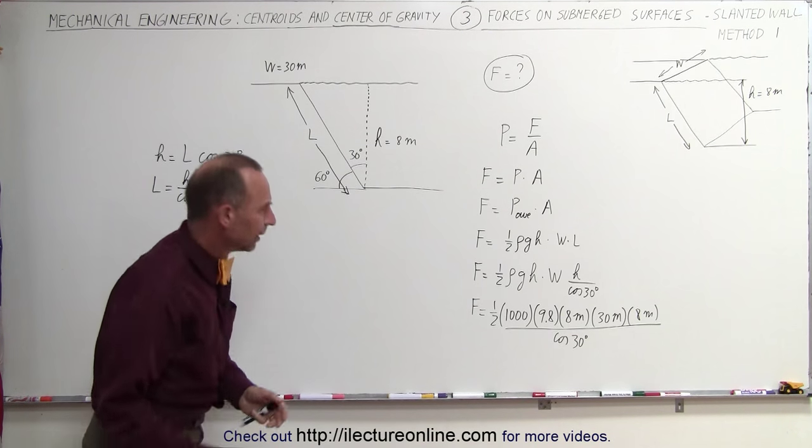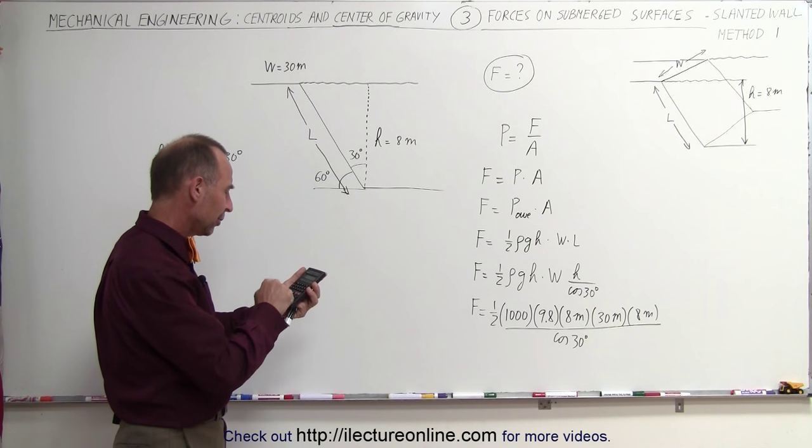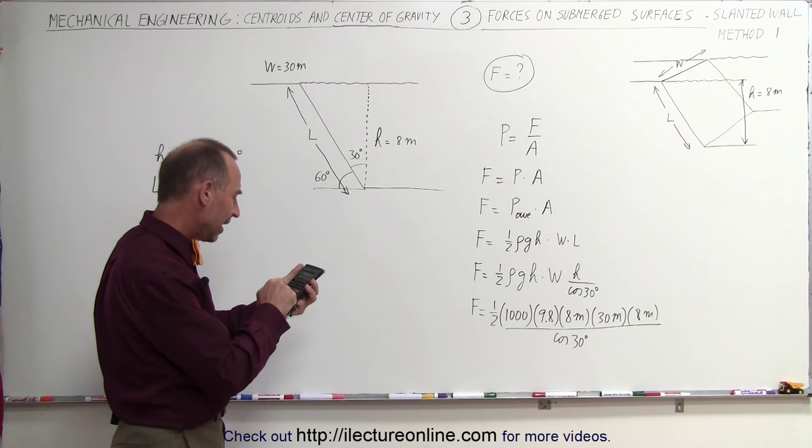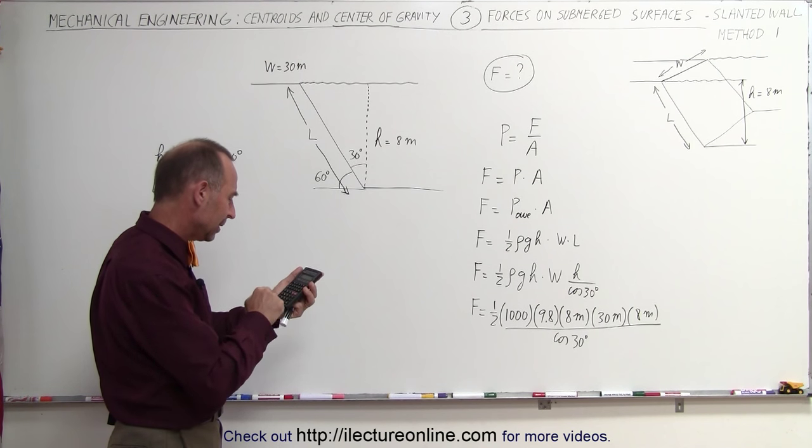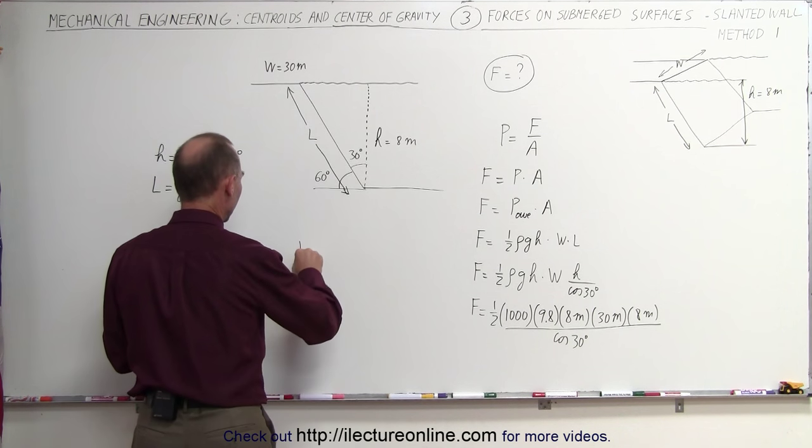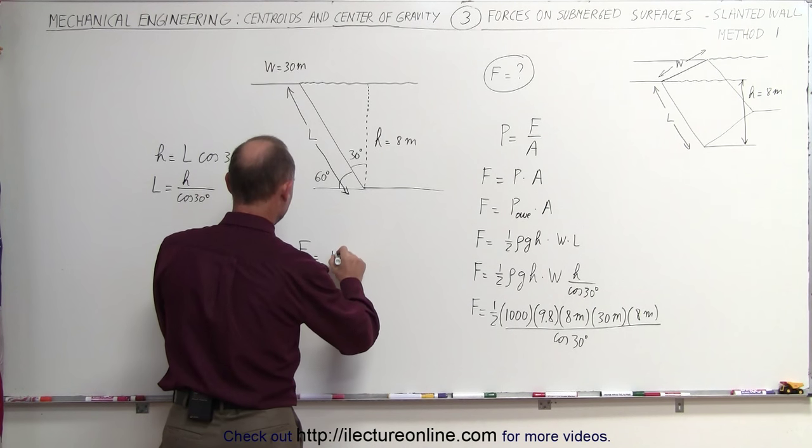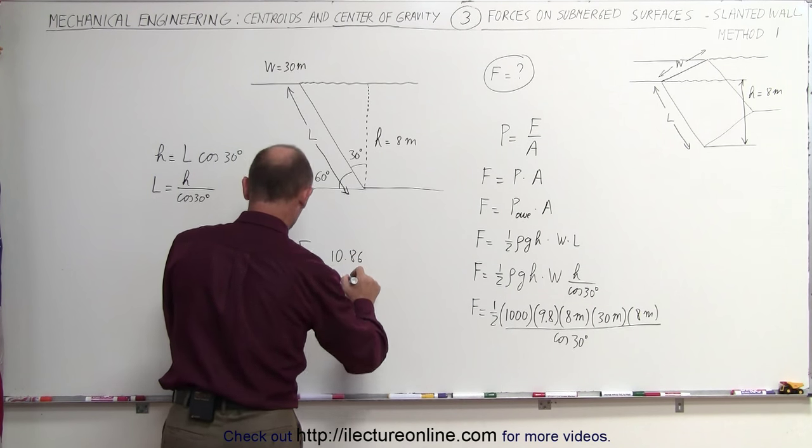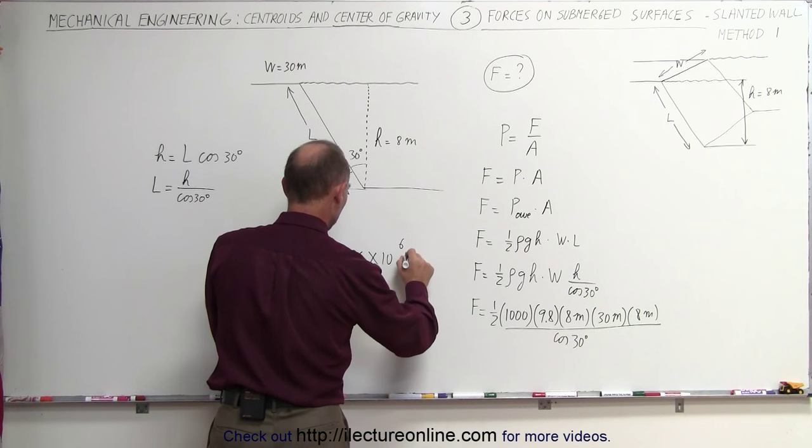See what we get when we work that out. So we get 500 times 9.8 times H squared, the two of them, times 30 and divide by the cosine of 30 degrees. So the total force, F total, is equal to 10.86 times 10 to the sixth Newtons.